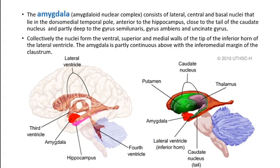Regarding the amygdala — it will be taught in detail in the limbic lecture — but what you should know now is that the amygdala is a nuclear complex with multiple nuclei. Its location is close to the tail of the caudate nucleus in coronal section, and it lies deep to the semi-lunar gyrus, gyrus ambiens, and uncinate gyrus — meaning the amygdala nuclear complex lies beneath the uncinate process.